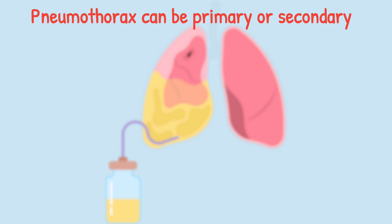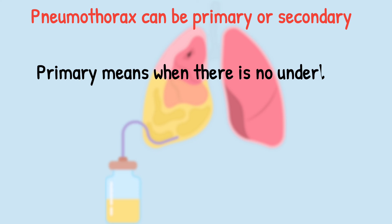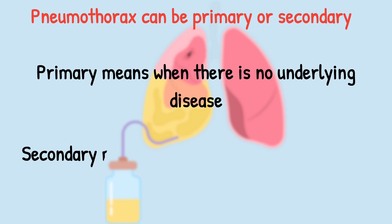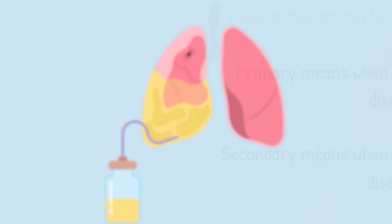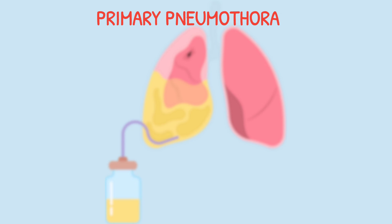Pneumothorax can be primary or secondary. In primary pneumothorax there is no underlying lung pathology. In secondary pneumothorax there is some underlying lung disease such as COPD, emphysema, or bronchiectasis.